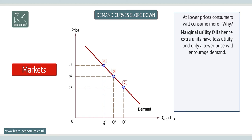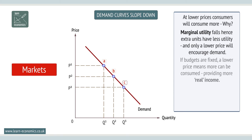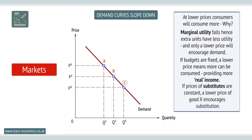Demand can also be explained in two other ways. If budgets are fixed, a lower price means more can be consumed, providing more real income. If prices of substitutes are constant, a lower price of good X encourages substitution. The two effects are called the income effect and substitution effect.